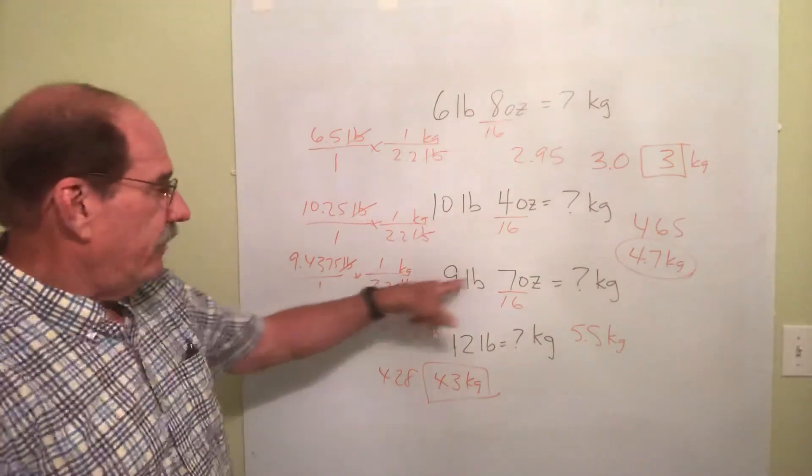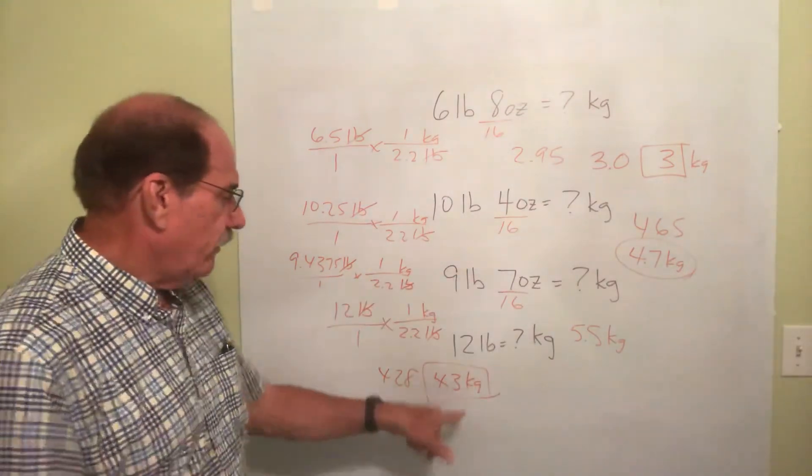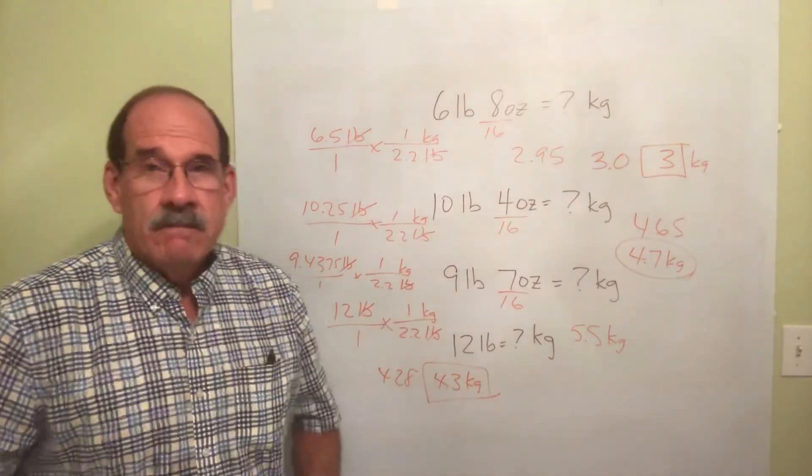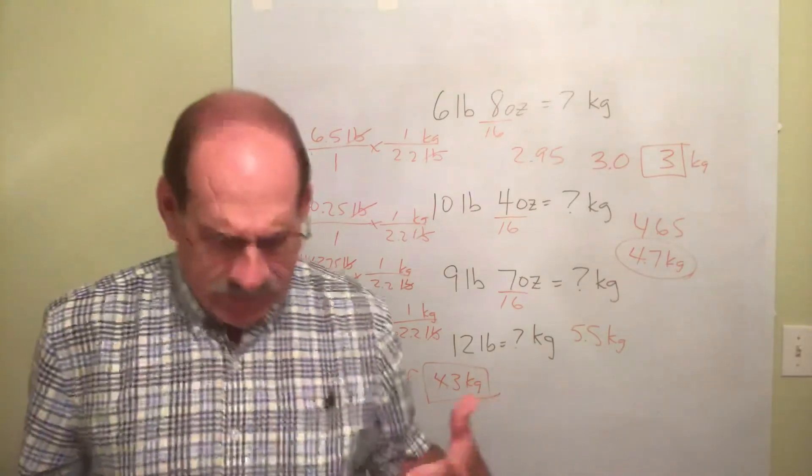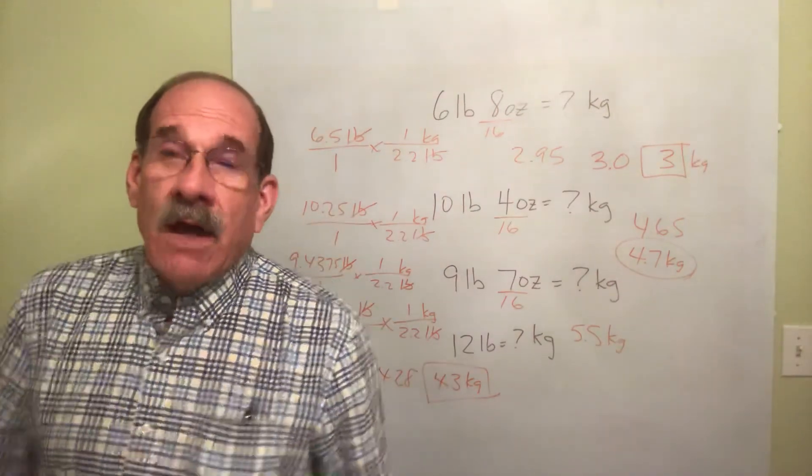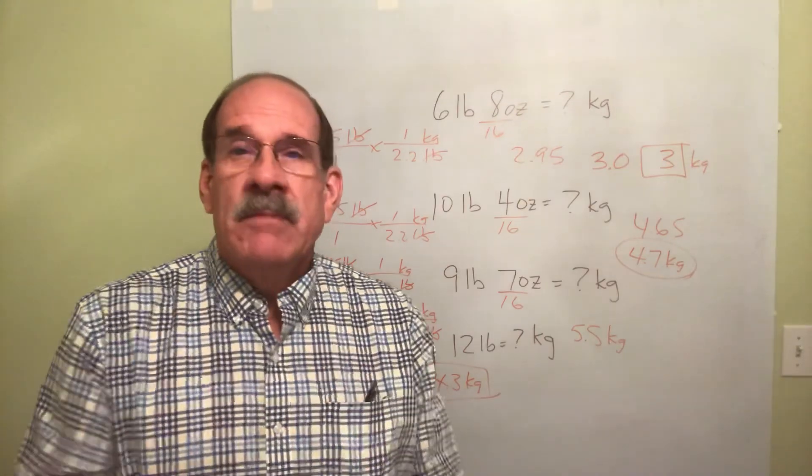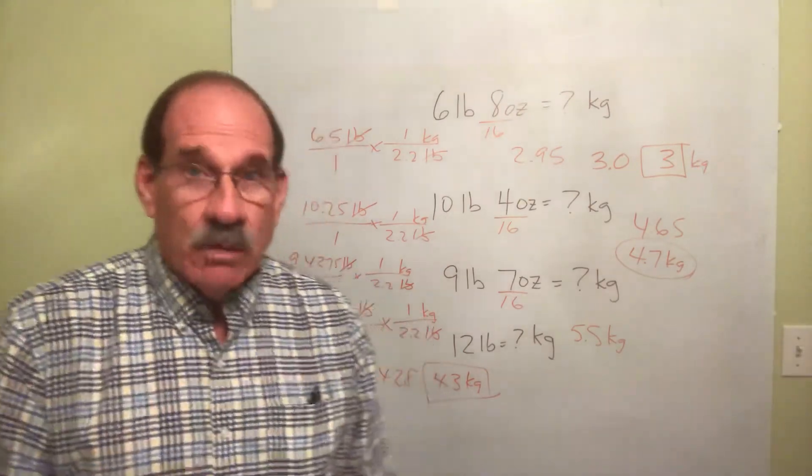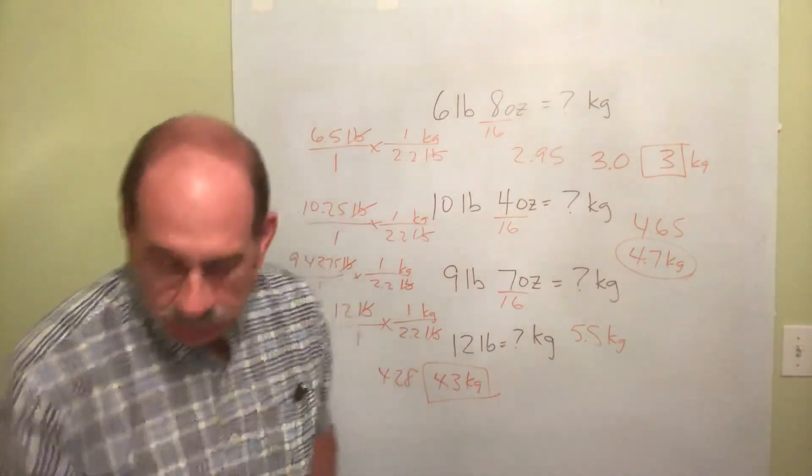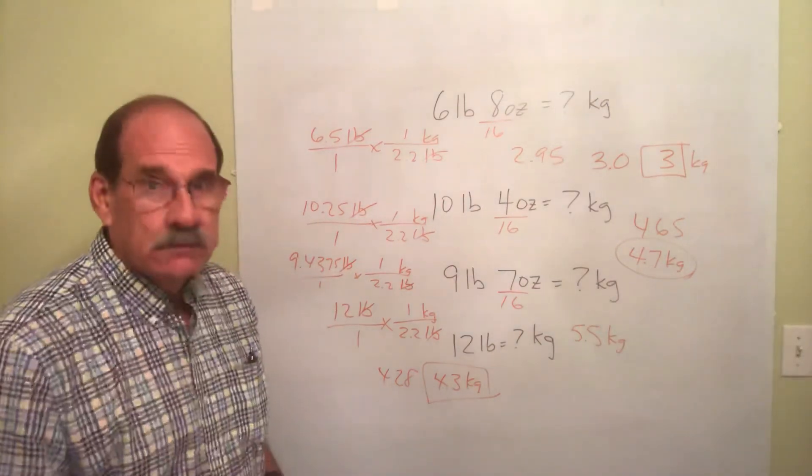So, the little nine pound, seven ounce kiddo here weighs 4.3 kilograms. So, there is some homework, I think there is, that covers this, converting this pound and ounce thing into kilograms. Work on that. So, there we go.